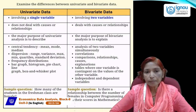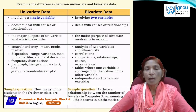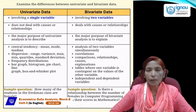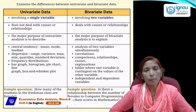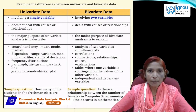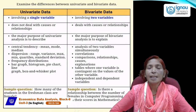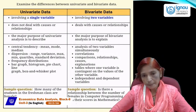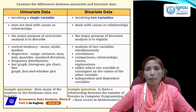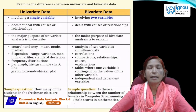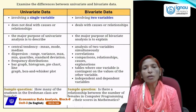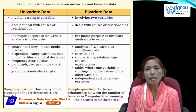Bivariate data involves analysis of two variables simultaneously. We can express it with the help of correlation, we can compare the two variables, and we can explain the relationship and causes. We can express it with tables where one variable is contingent on the values of the other. Bivariate data includes two variables: one is the dependent variable and the other is the independent variable.